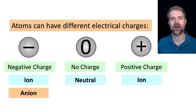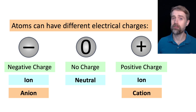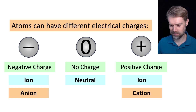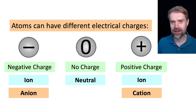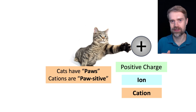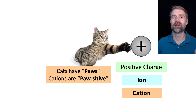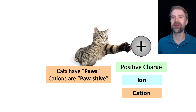We have some special words for positive and negative ions. A negative ion is called an anion, and a positive ion is called a cation. Here's a great way to remember that cations are positive ions: cats have paws and cations are positive. You're never going to forget that cations are positive.